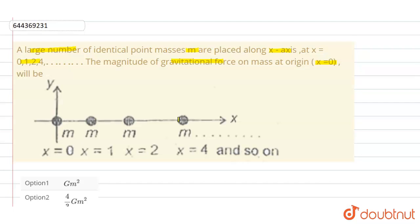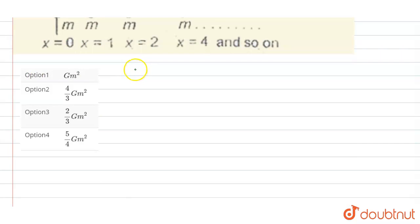So we have to calculate the gravitational force. So one by one we will calculate the gravitational force from x equals 1, and then x equals 2, and then so on, and add all the gravitational forces. So we know the formula of gravitational force between any two point masses.